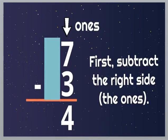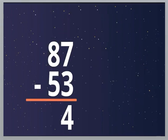First, subtract the right side, the ones. Primero resta el lado derecho, la columna de las unidades, the ones column. Seven minus three equals four. This is our answer. Now let's go to the next one.